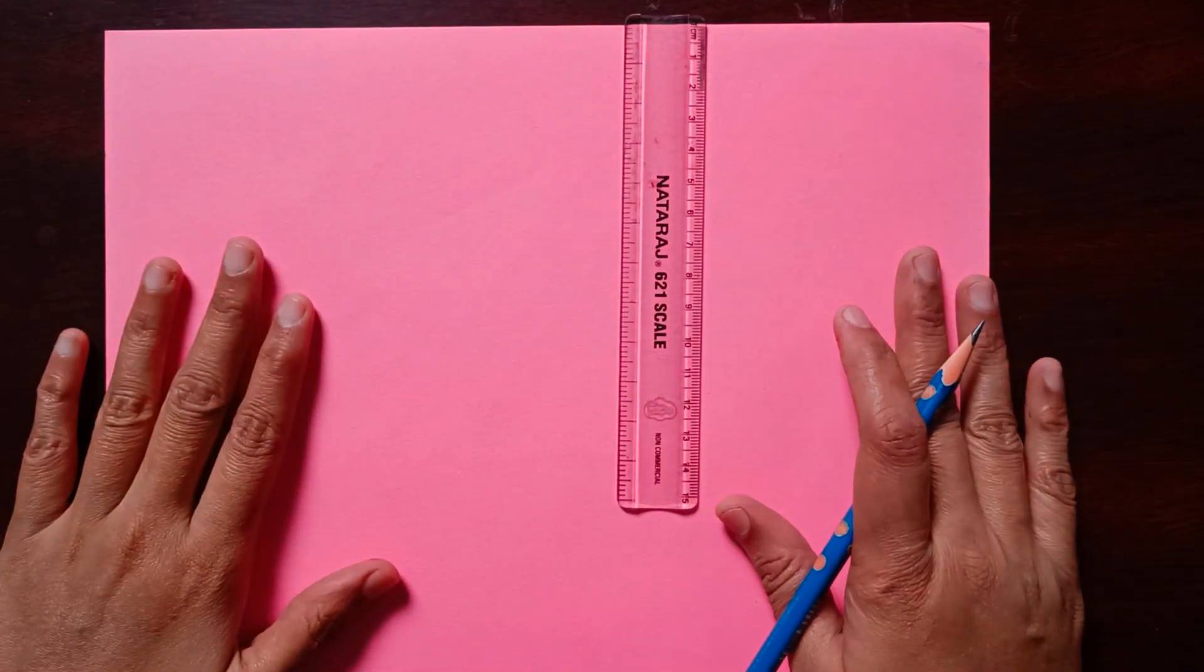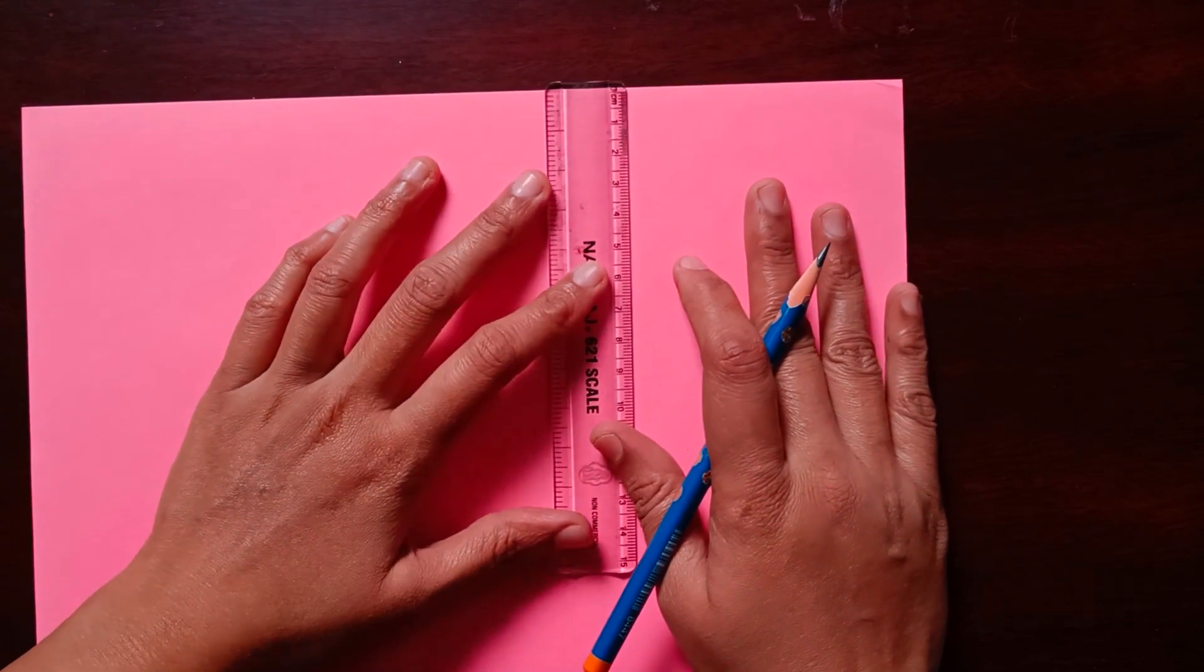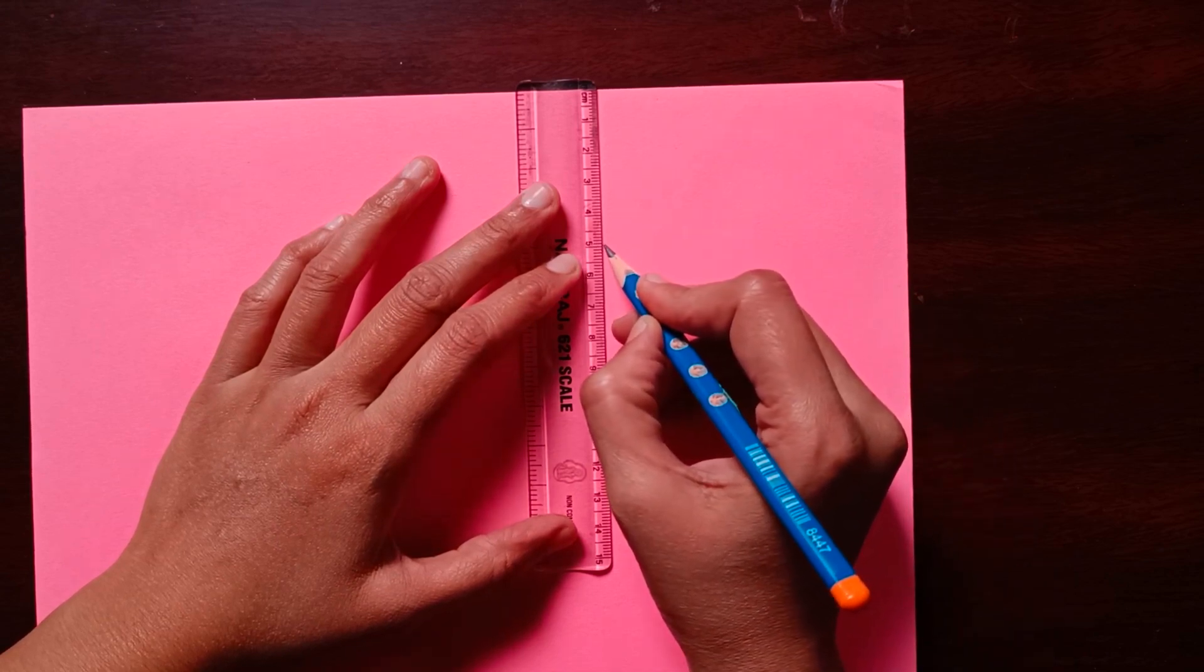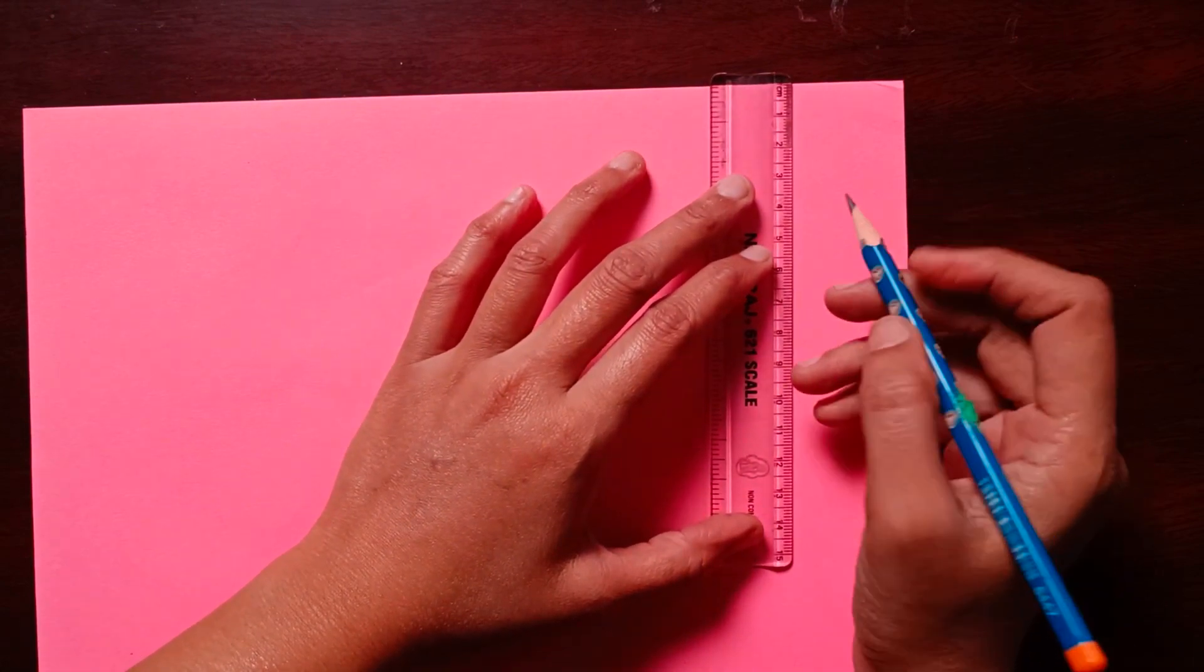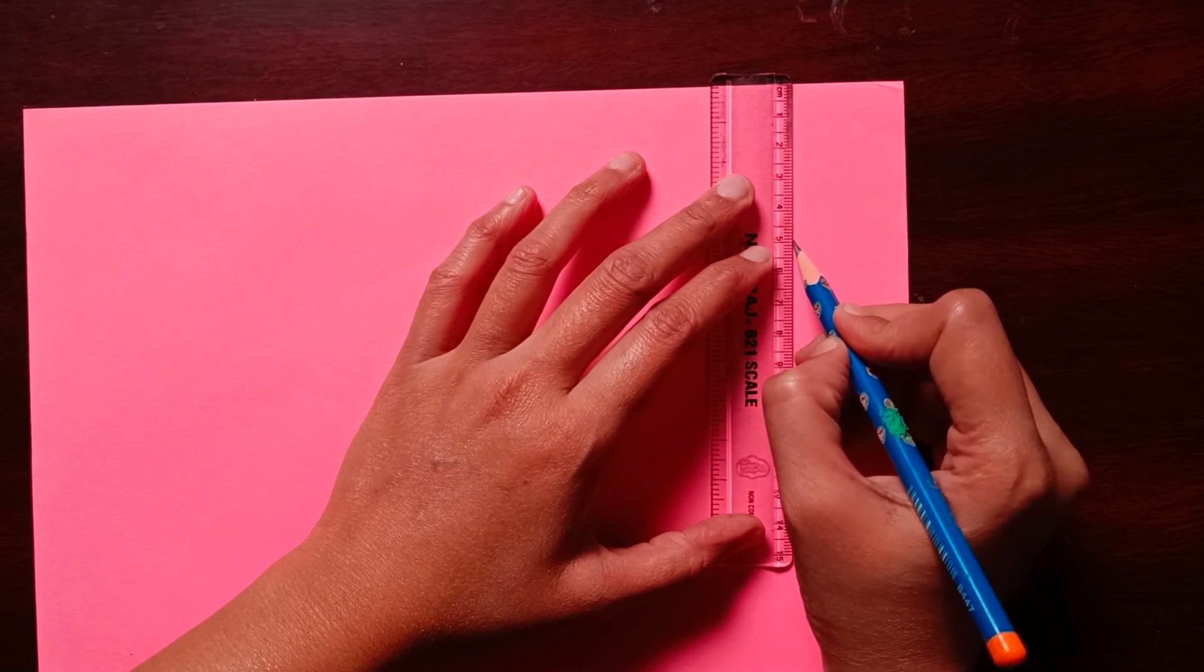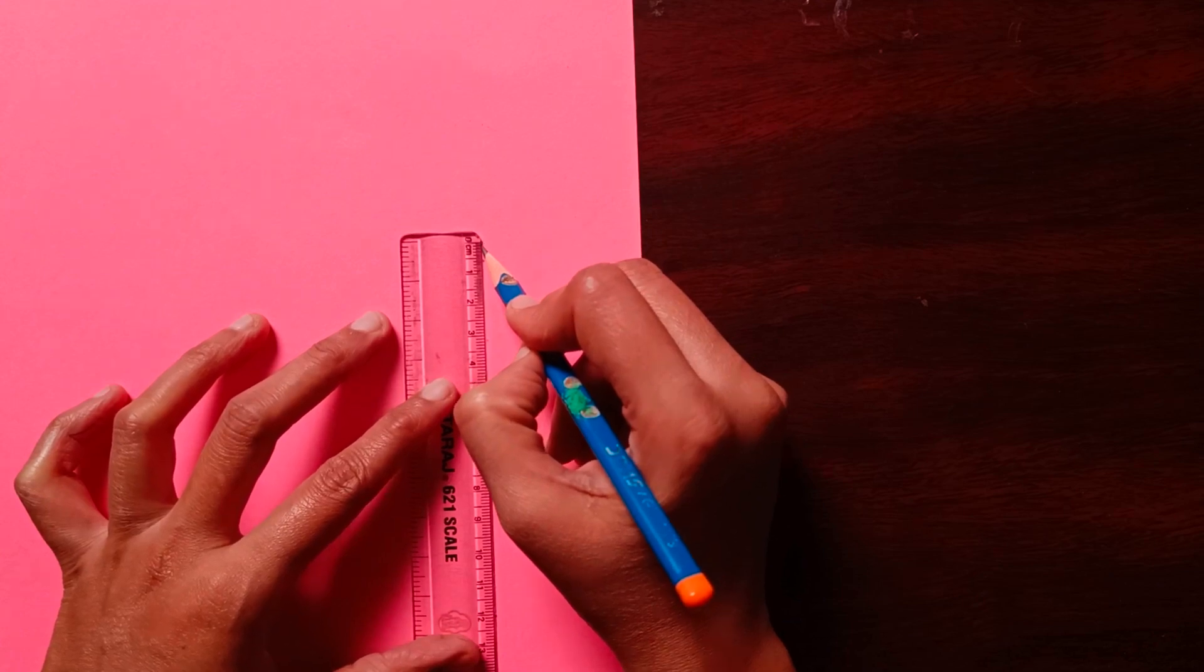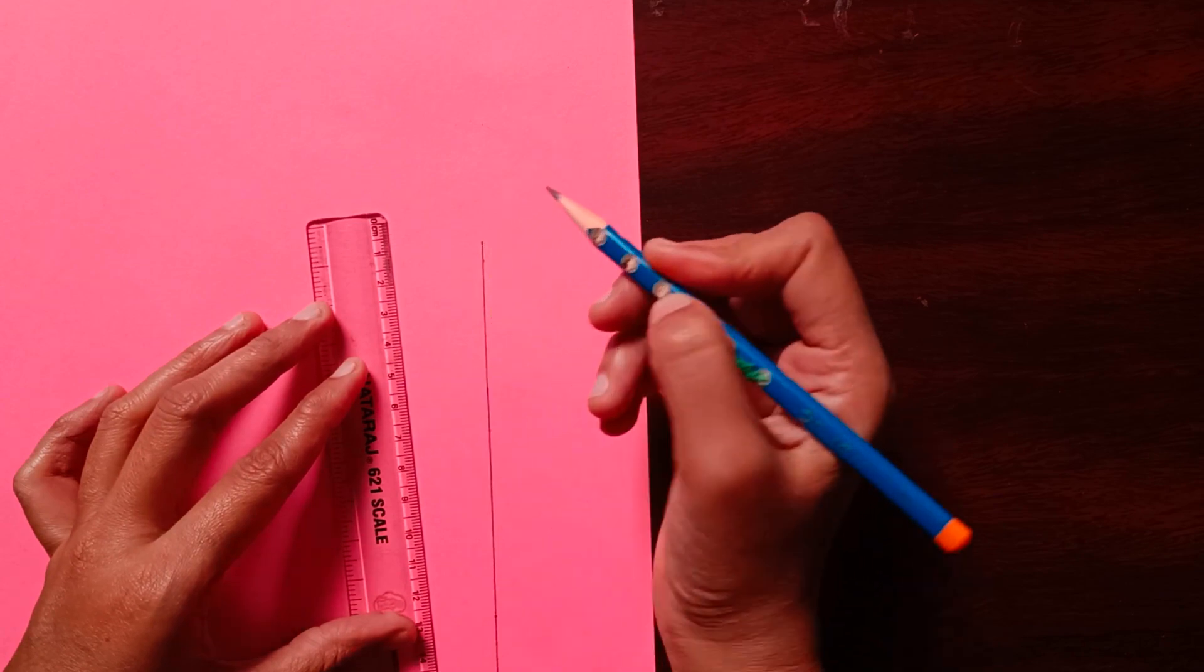So first we have to take A4 size paper. From here I will take 5 cm. This is 5 cm, exact 5 cm. Now from here, this length should be 15.7 cm.